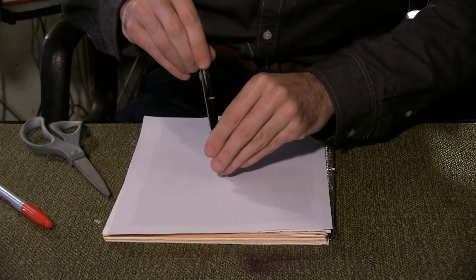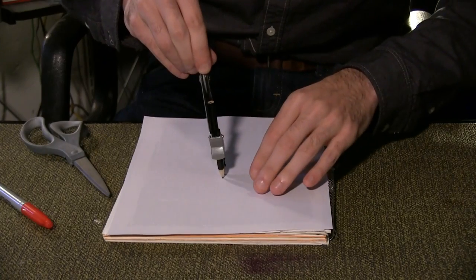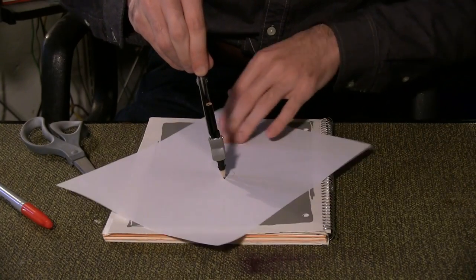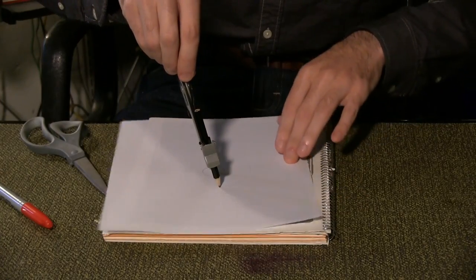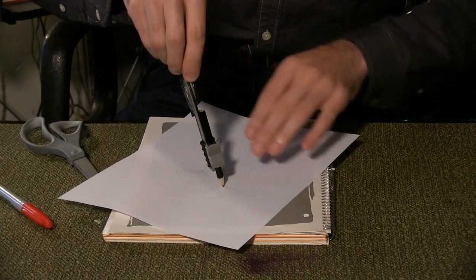First, you'll need a template. Using the compass, draw a 1 inch diameter circle in the middle of a piece of paper. Using the first circle's center point, draw a 4 inch circle around the first.